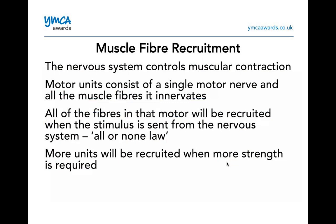Muscle fibre recruitment: the nervous system controls muscular contraction. Motor units consist of a single motor nerve and all the muscle fibres it innervates. All of the fibres in a motor unit will be recruited when the stimulus is sent from the nervous system — this is known as the all-or-nothing law, which has come up in past exam papers. More units will be recruited when more strength is required — the heavier the load, the more motor units you need to recruit.